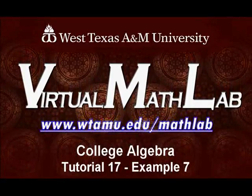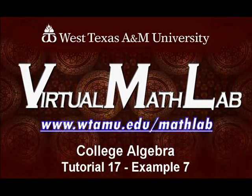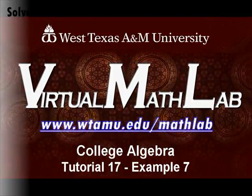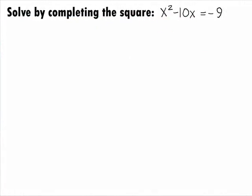Hi, welcome to the WTAMU Virtual Math Lab. This video will step you through College Algebra Tutorial 17, Example 7. In this example, we want to solve the quadratic equation x squared minus 10x equals negative 9 by completing the square.